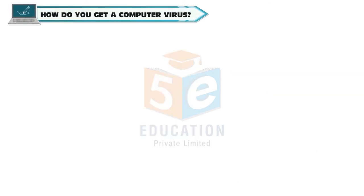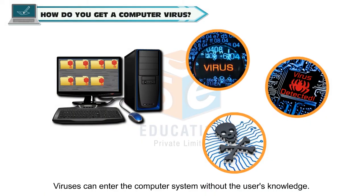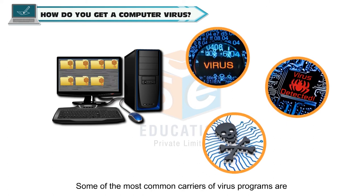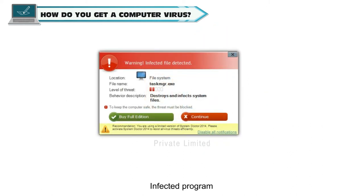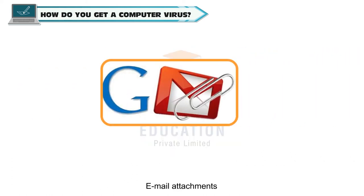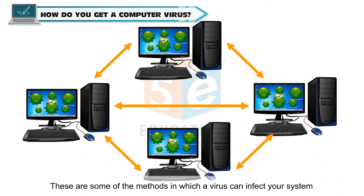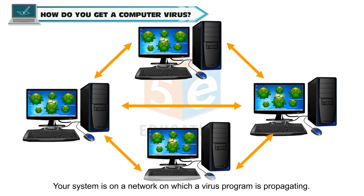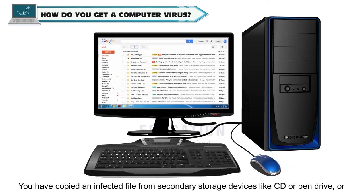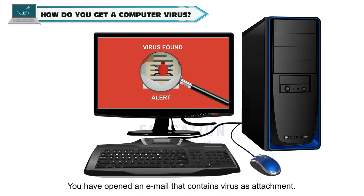How do you get a computer virus? Viruses can enter the computer system without the user's knowledge. Some of the most common carriers of virus programs are infected programs, infected CDs, DVDs or pen drives, and email attachments. Your system may be on a network on which a virus program is propagating, you may have copied an infected file from secondary storage devices like CD or pen drives, or you may have opened an email that contains a virus as an attachment.